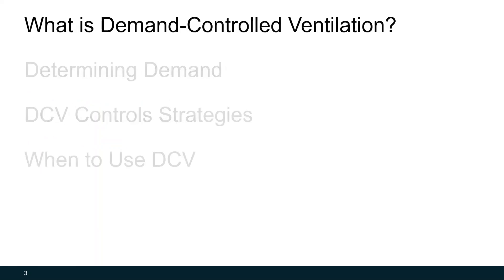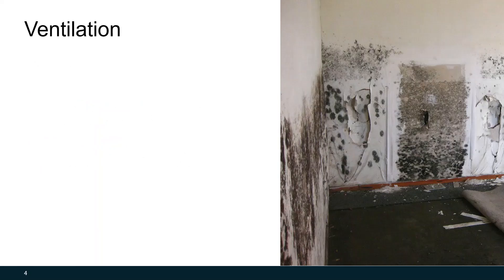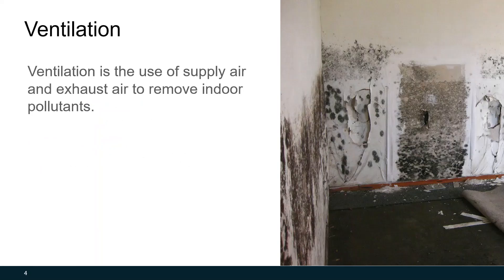What is Demand-Controlled Ventilation? First we need to define ventilation. Ventilation is the use of supply and exhaust air to remove indoor pollutants. Often when we say the term ventilation, it's synonymous with outdoor air, but that's only because we use outdoor air to replace the air that we exhaust from the building, which we exhaust to remove the pollutants.